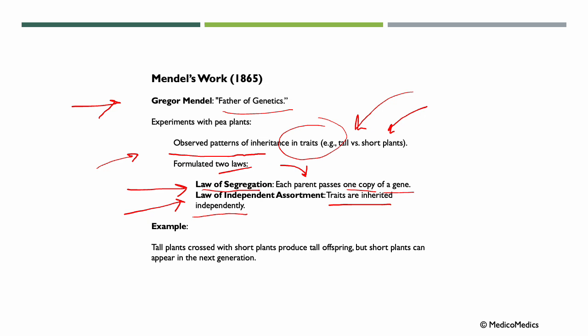For example, tall plants crossed with short plants produce tall offspring, but short plants can appear in the next generation. Following from Mendel's discoveries, we found that traits actually don't blend like previously thought. Instead, they are passed down in patterns — it's like flipping a coin.